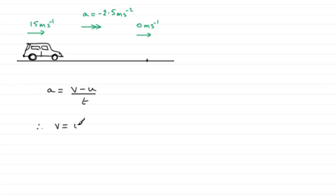But we do have to take care on this. The final velocity is 0, the initial velocity is 15, and then we've got plus the acceleration which is plus minus 2.5 times t. So this is minus 2.5t.